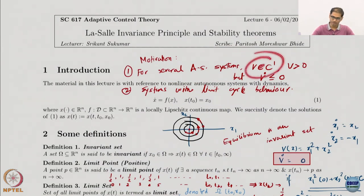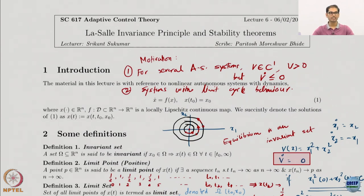Welcome to Control of Nonlinear Dynamical Systems. We started an interesting lecture last time — a little bit complicated — but we started discussing the LaSalle invariance principle. This is for scenarios where you have asymptotically stable systems with a nice enough Lyapunov candidate, but when you take V dot, the directional derivative, it turns out that it is only negative semi-definite.